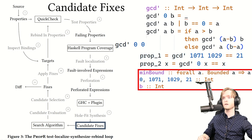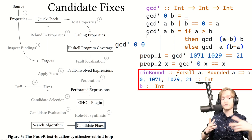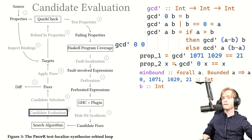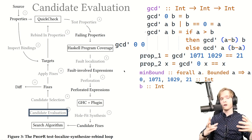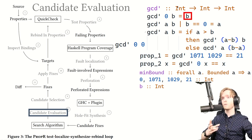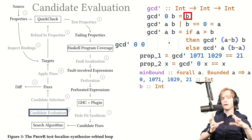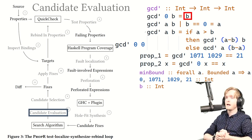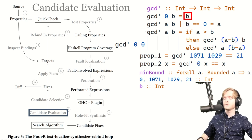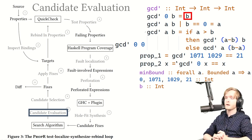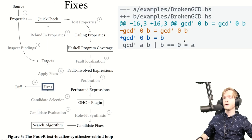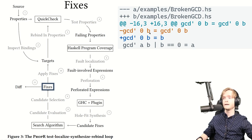Crucially, 'b' is in scope — it's an argument to the function, and since this hole is on the right-hand side of the definition, 'b' is an Int in scope, so it will be a valid hole fit that gets suggested. Then we do candidate evaluation: we take all the candidates, replace the holes with them, and run the tests again to check if the candidate fixes the tests. We replace the hole with 'b,' which is the right solution, it works, satisfies all the properties, and we generate a diff saying: remove this line and replace it with just 'b.'